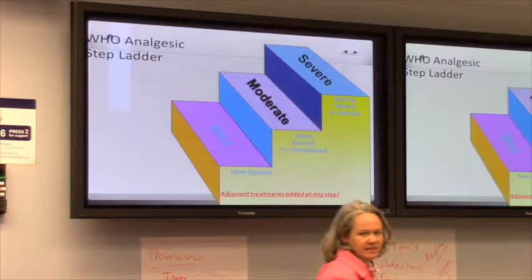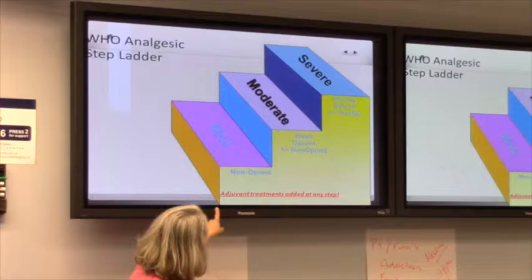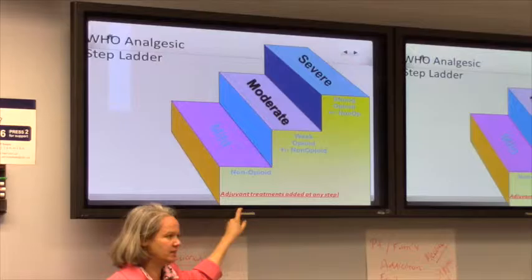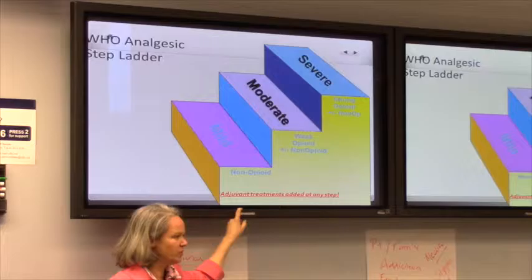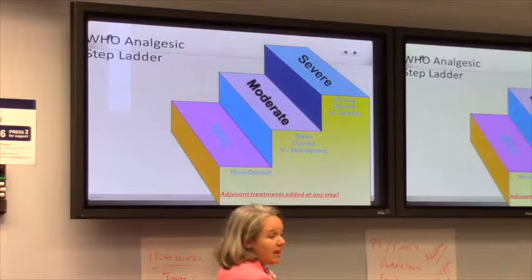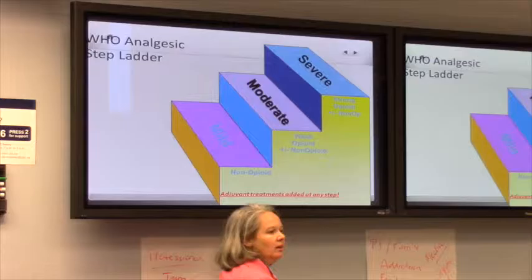Adjuvant treatments can be added at any step. An adjuvant is a medication which is not an analgesic but which has analgesic effect. For neuropathic pain, adjuvants include gabapentinoids — gabapentin, Lyrica — carbamazepine, and duloxetine (Cymbalta). I have used duloxetine occasionally for central pain such as central post-stroke pain.